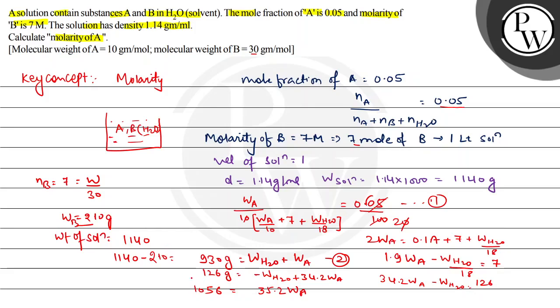Weight of A is 30 gram, which means molarity of A is 3M. The molarity of A is 3. The final answer will be 3M. I hope you understand it very well. Thank you.